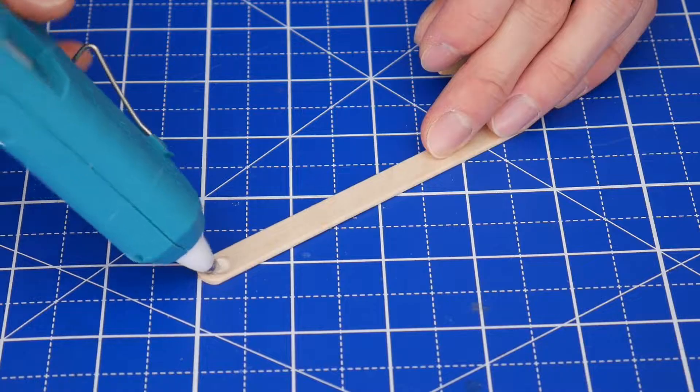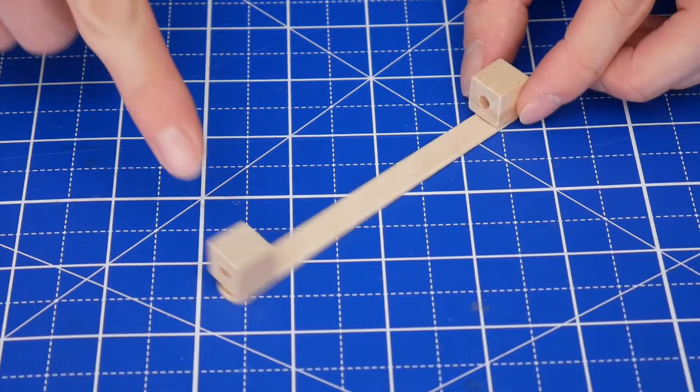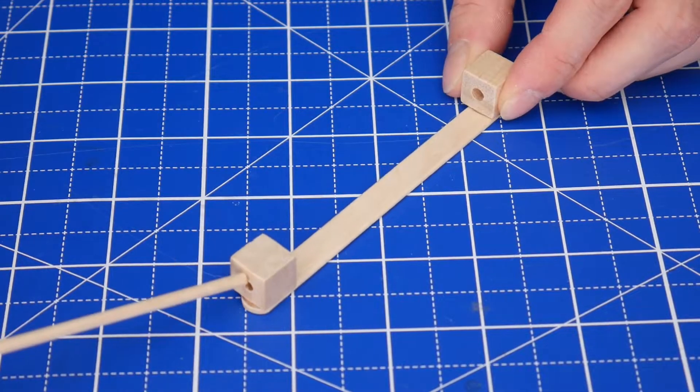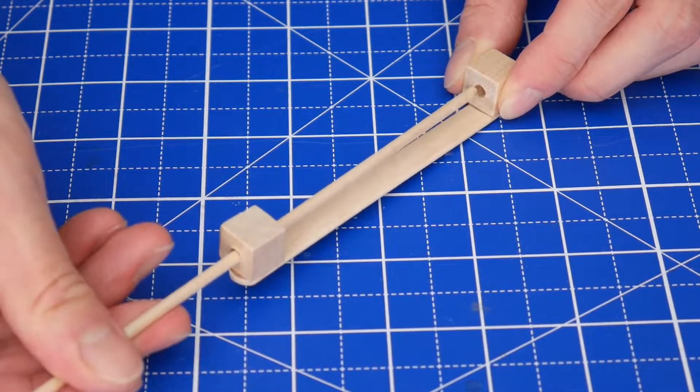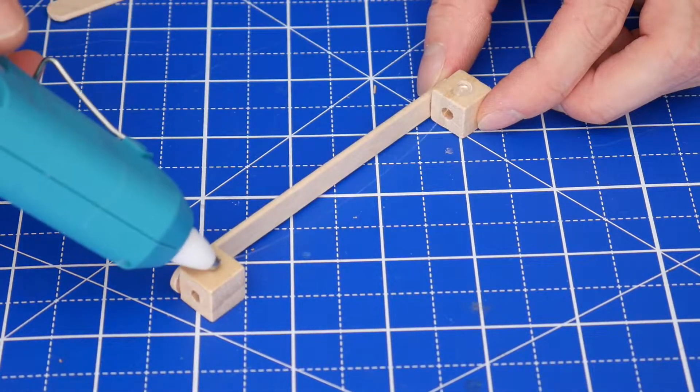Hot glue two cubes with holes onto the ends of a craft stick here and here, making sure that the holes line up. Test by putting another eighth inch dowel through them to make sure that the holes are aligned. Then glue on craft sticks to the remaining sides.